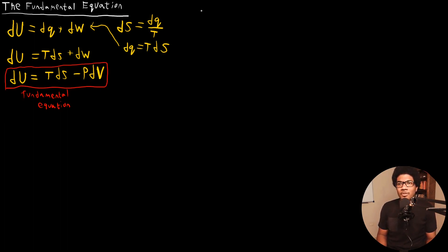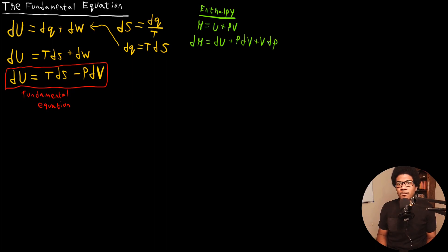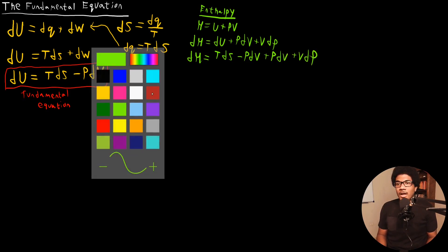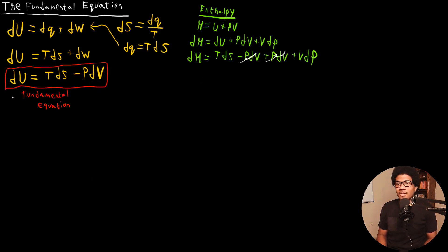Let's take one example — enthalpy. If we start with our definition of enthalpy, we know it's H = U + PV. If we take the differential, we have dH = dU + PdV + VdP. Now we have dU there, so we can plug in our fundamental equation to bring entropy into play. We get dH = TdS - PdV + PdV + VdP. The PdV terms cancel out, so we end up with the final expression: dH = TdS + VdP.